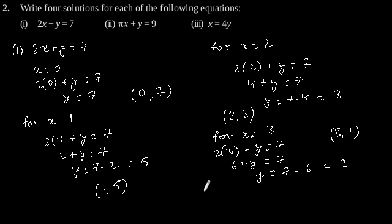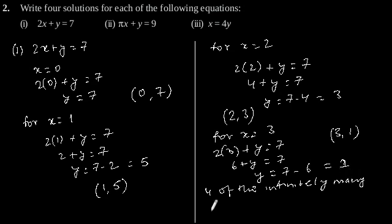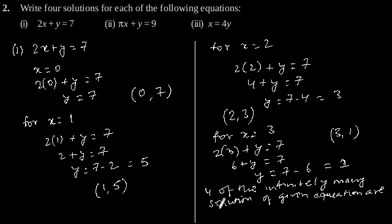So we can say that 4 of the infinitely many solutions of the first equation are: (0, 7), (1, 5), (2, 3), and (3, 1).